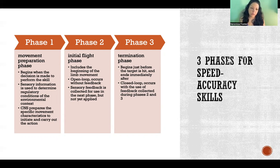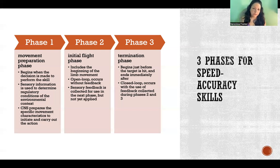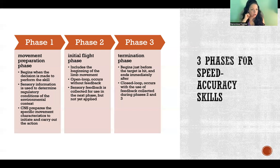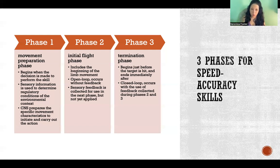The central nervous system then prepares the specific movement characteristics to initiate and carry out the action. Phase one involves taking in information, making the decision about the action, and preparing to do it. Phase two starts when you actually begin the limb movement — this is the open loop portion occurring without sensory feedback to make corrections. You are executing the plan from phase one while collecting sensory information as you go, but it's happening too quickly to incorporate that feedback, which will instead be used to correct the movement in phase three.